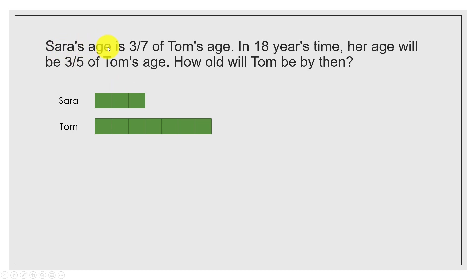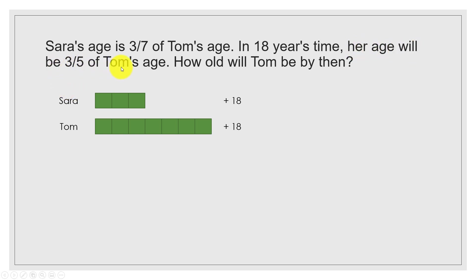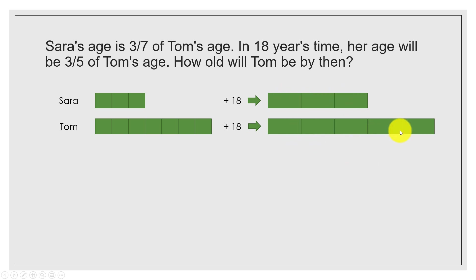As a shortcut: when an age is expressed as a fraction, Sarah's age will be 3 units and Tom's age will be 7 units. Now, in 18 years' time, Sarah's age will be 3/5 of Tom's age, so Sarah is represented by 3 units and Tom by 5 units.